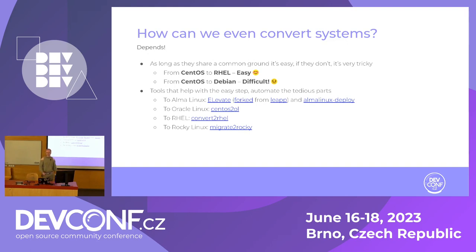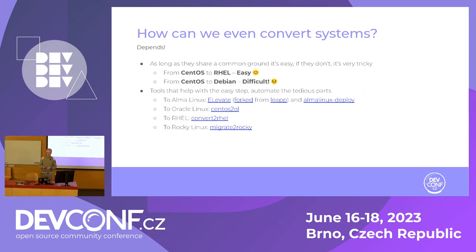There's a few tools that people have developed over time. I don't think Convert2RHEL was the first one — I think that was actually CentOS to Oracle Linux. There's Elevate, which allows you to upgrade systems, like from CentOS going to Alma. They also have an AlmaLinux Deploy, which converts from CentOS or CentOS Stream over to Alma. For Oracle, there's CentOS to Oracle. They have Convert2RHEL, which converts you to RHEL. And then for Rocky, there's Migrate to Rocky.